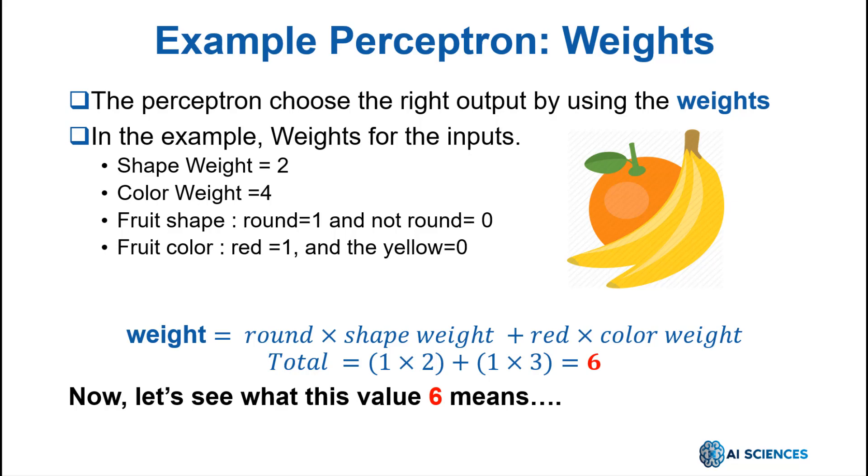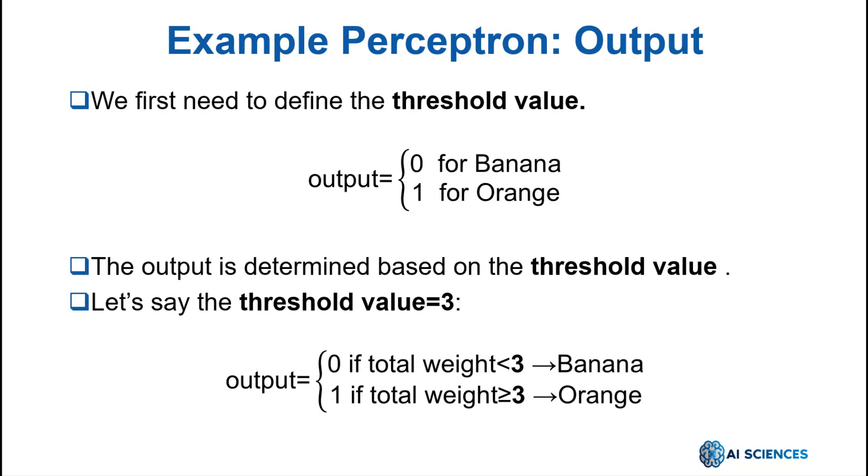Now, let's see what this value 6 means. We first need to define the threshold value. Because the perceptron's output is either 0 or 1, 0 for a banana and 1 for an orange, this output is determined like this: If the value of the linear combination is higher than the threshold value, then the output is 1, and if it is not, the output is 0. So, let's say the threshold value is 3, which means that if the calculation gives you a number less than 3, we have a banana. But if it's equal to or more than 3, then we have an orange. That's how perceptron works.